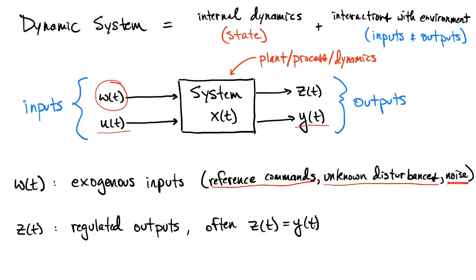In addition to sensed outputs, you can also produce other outputs called regulated outputs. This is simply a way of transforming what you do know — Y — into something you might want to use later. For the most part we won't use Z of T as anything different from the outputs themselves. But this is the overall picture of a dynamic system, which motivates what we want to do with control.